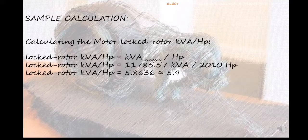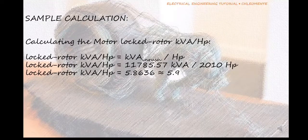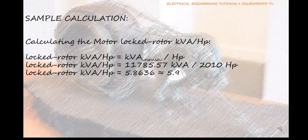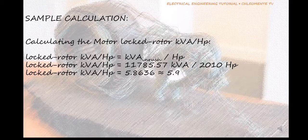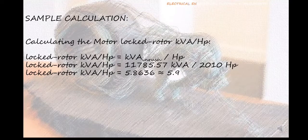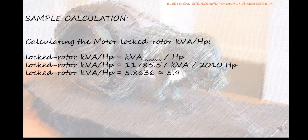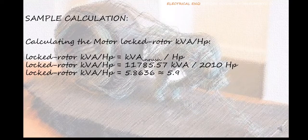So calculating the motor locked rotor kVA per HP, that is inrush kVA divided by the motor HP rating. Then 11,785.57 kVA divided by 2010 horsepower will yield 5.8636 or 5.9.